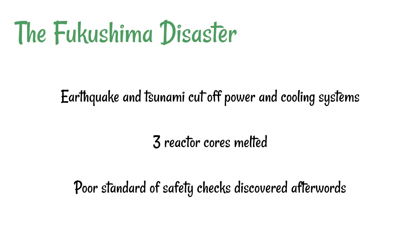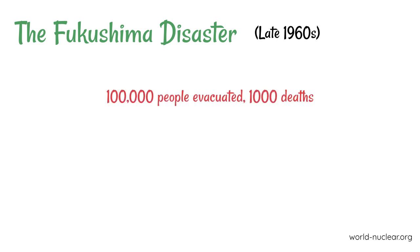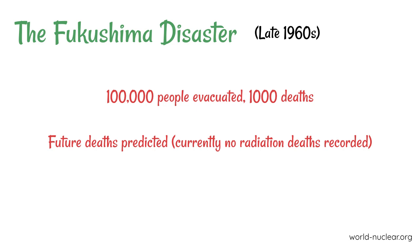Safety standards can't prevent earthquakes and tsunamis, but it was suggested that it was predictable that if they did occur, this outcome would have resulted — and therefore preventative measures could have been taken. As a consequence, it was necessary to evacuate 100,000 people from the surrounding area, and there were around 1,000 deaths. These deaths weren't caused by the disaster itself but by poor conditions in the evacuation area. While there were no direct deaths from the disaster, future deaths are predicted, as radiation received in low doses can cause problems like cancers that may take years to develop.